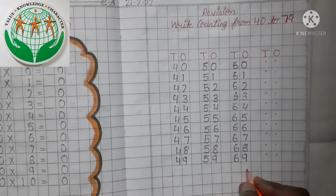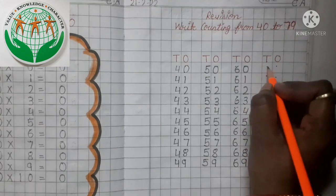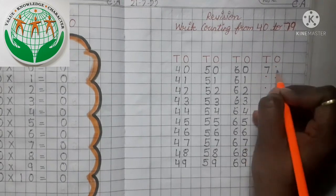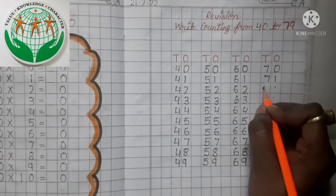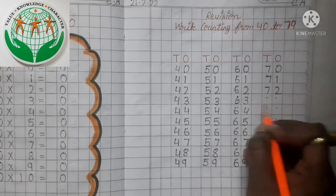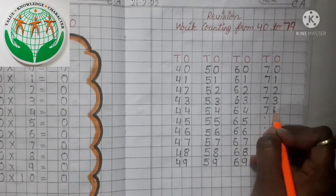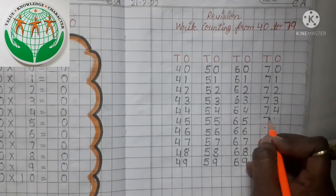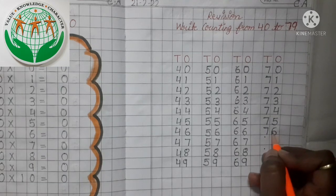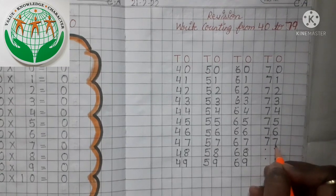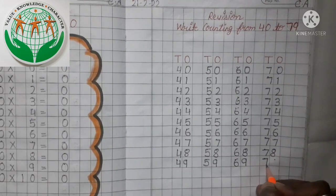Now tell me, what comes after 69? Yes, number 70. So we write here number 70. 70, 71, 72, 73, 74, 75, 76, 77, 78, and last 79.